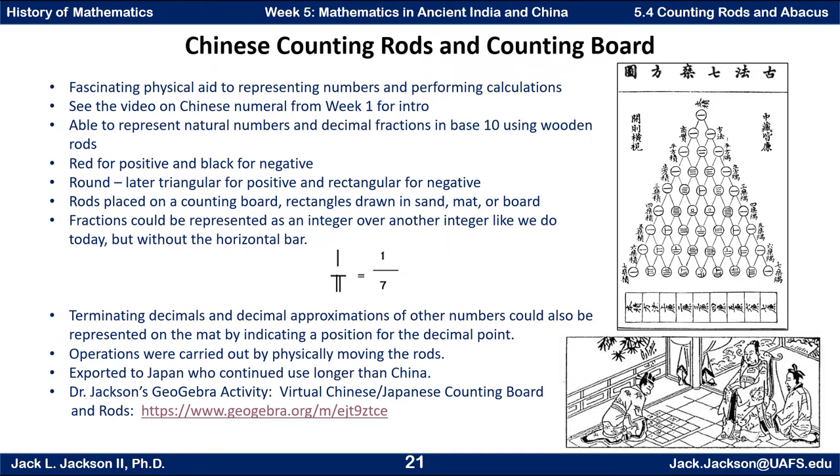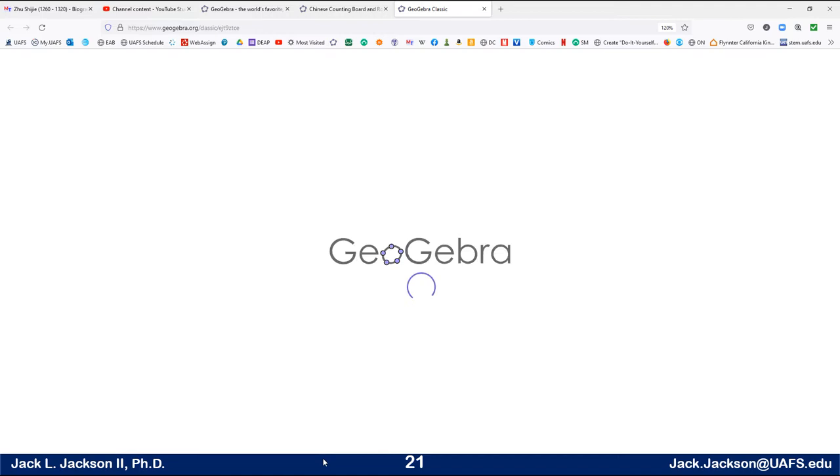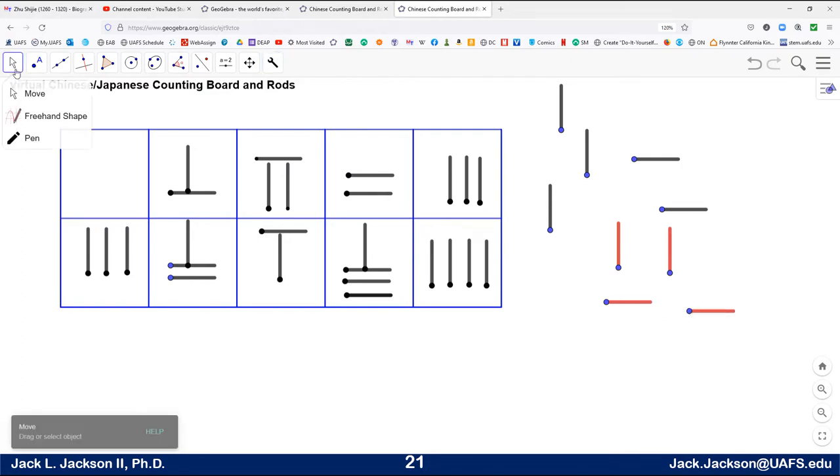So here we have a virtual counting board. We have some rods. Each one of these is an individual thing and they can be clicked on and just physically moved around just like they were actual sticks that we had. We have some tools here for creating some extra vertical rods, as many as we need, or horizontal ones as needed. We can make some that are red. We need those. And so we can use red and black. It really doesn't matter which one you call positive and which one's negative as long as you're clear about what you mean.